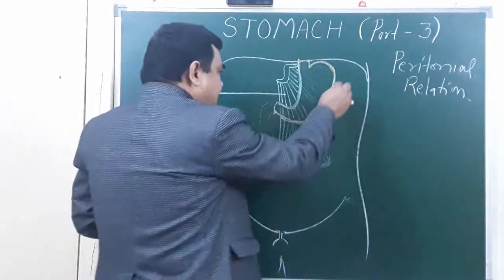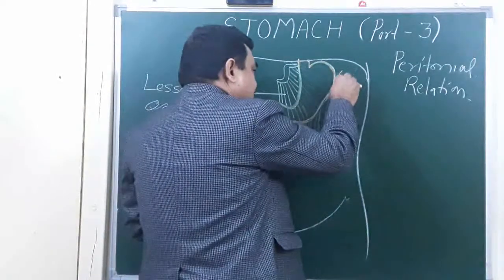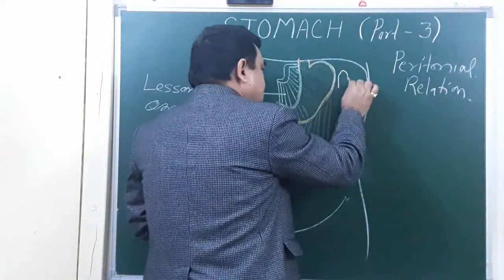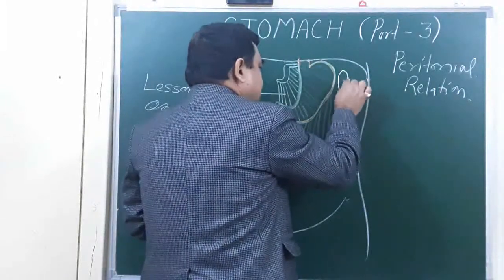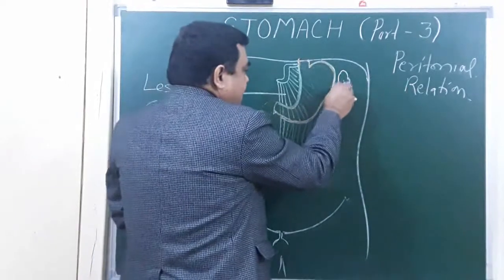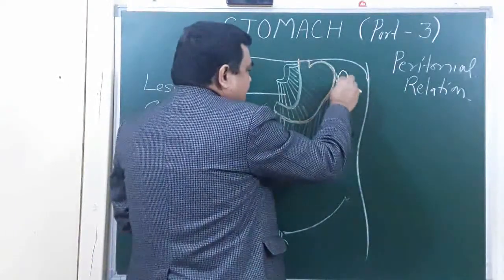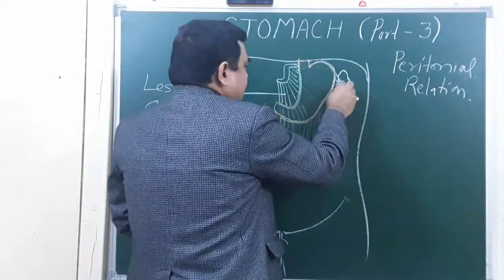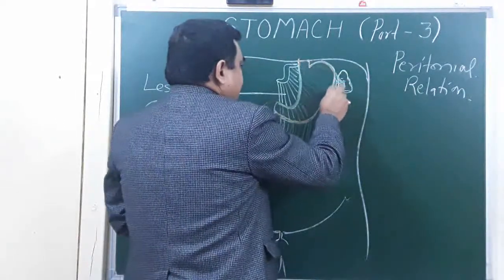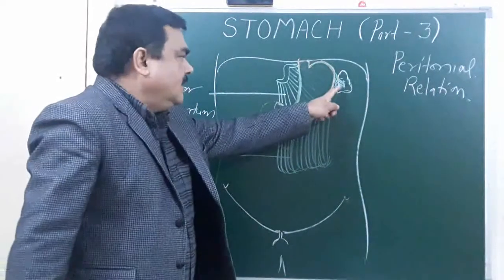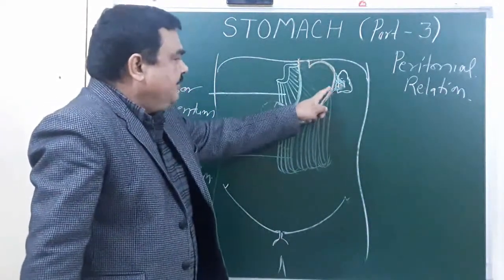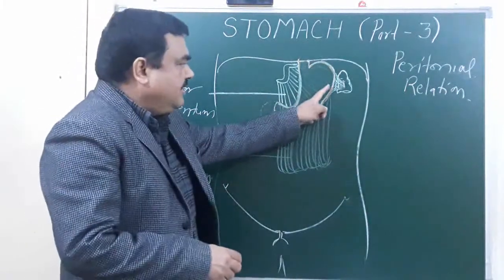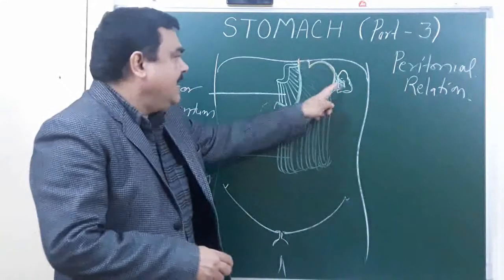Here is the position of the spleen. This peritoneal fold forms the gastrosplenic ligament, which connects the stomach to the spleen.